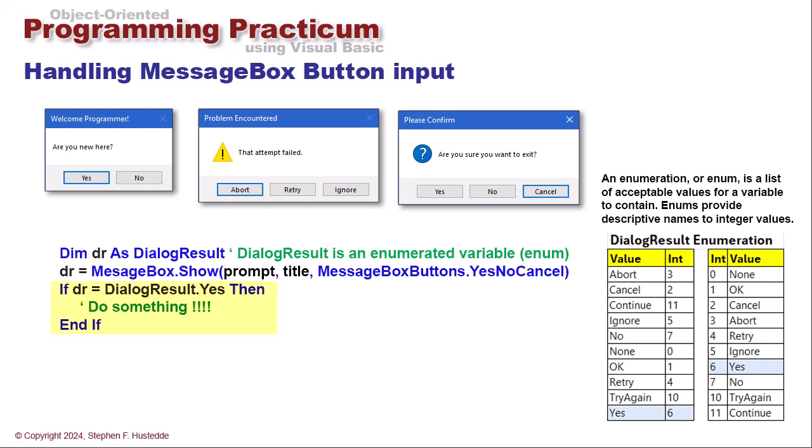And then we can use a conditional. So if dr equals dialogue result dot yes, they click the yes button, then I want to do something. Now that dialogue result dot is all of those different values that are available in the enumeration. So I could say if dr equals dialogue result dot retry or try again or dialogue result dot continue. Those are all valid values for comparing the dr.